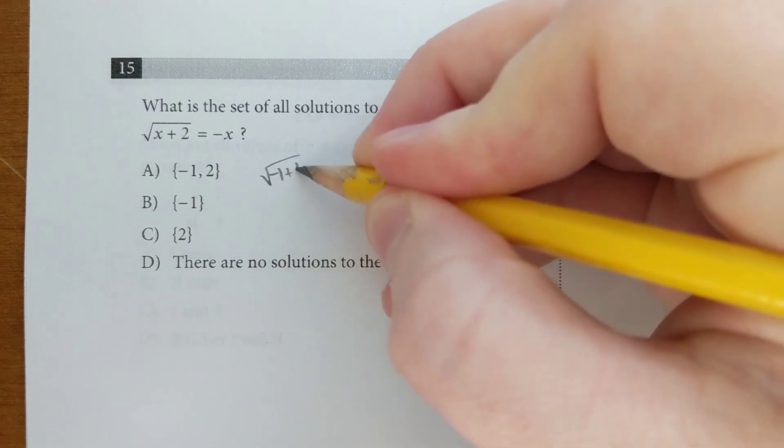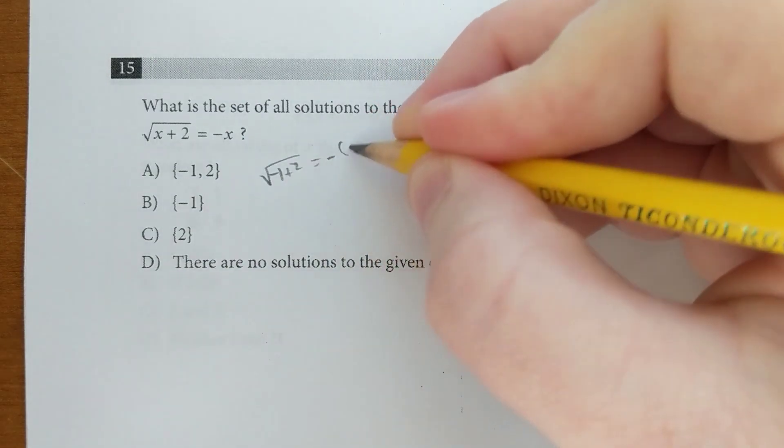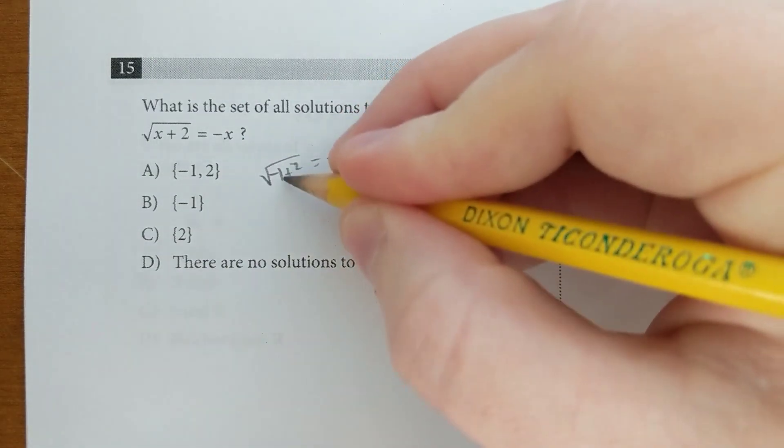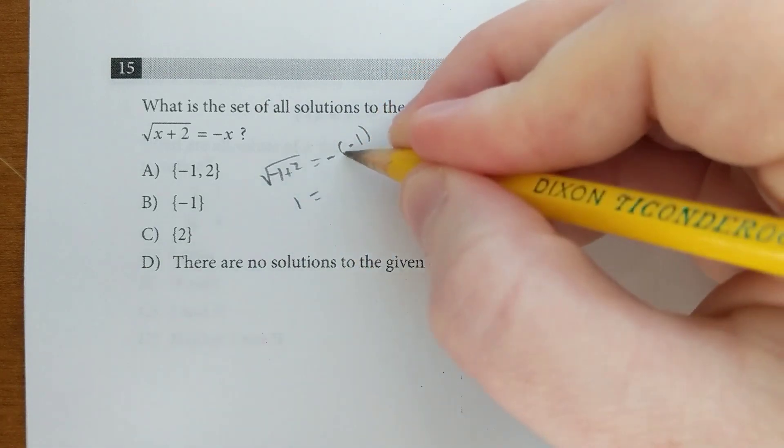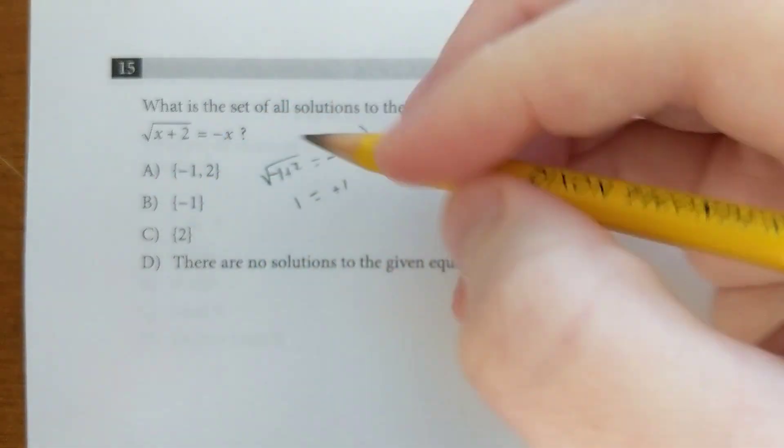So the square root of negative 1 plus 2, does that equal negative negative 1? Well, that's the square root of 1, which is 1, and that's positive 1, so that works.